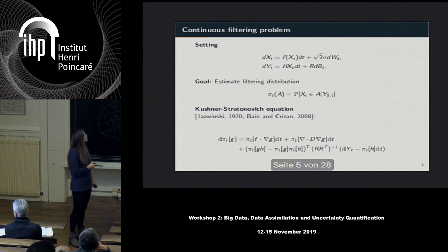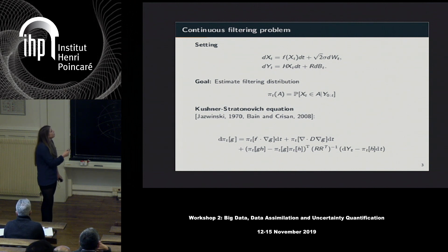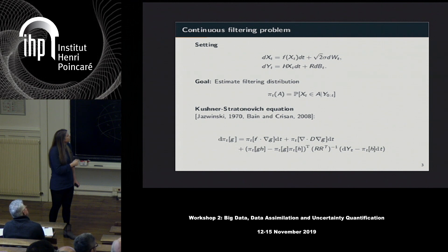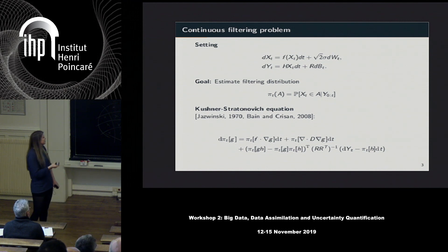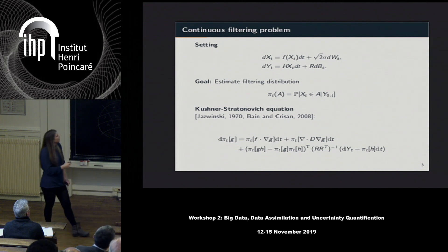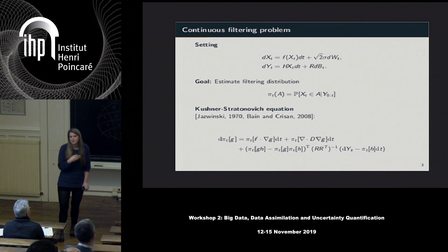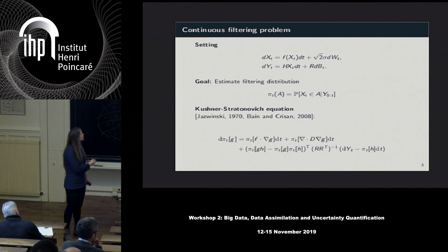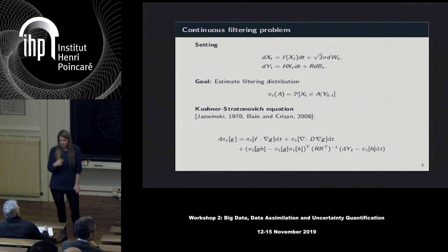I'm going to quickly describe the setting I consider. I assume that my signal of interest is given by an SDE and that my observations are also continuous, also given by an SDE. The ultimate goal in data assimilation is to estimate the posterior distribution, but in these settings that is quite hard — you cannot find an analytic solution. What we do know is that the evolution of this posterior density is given by the Kushner-Stratonovich equation, but this itself we cannot solve.